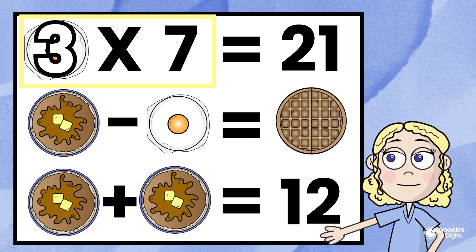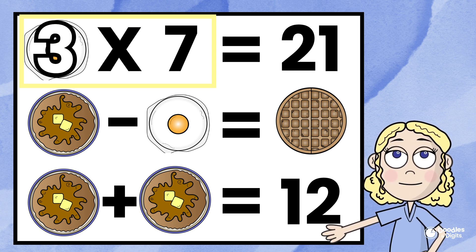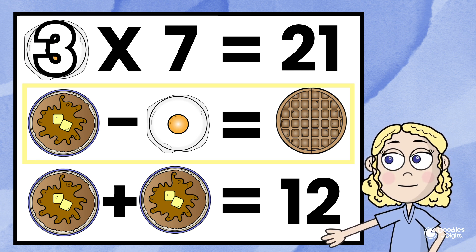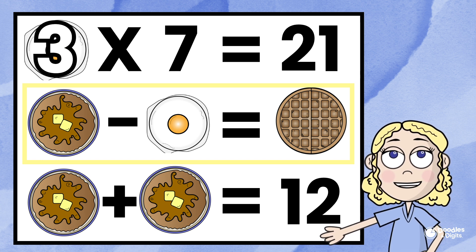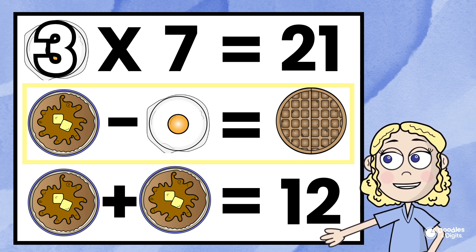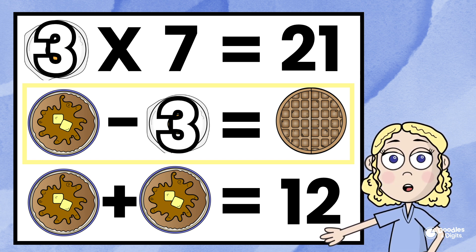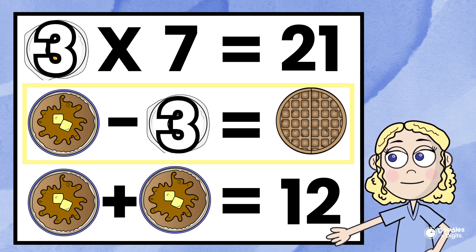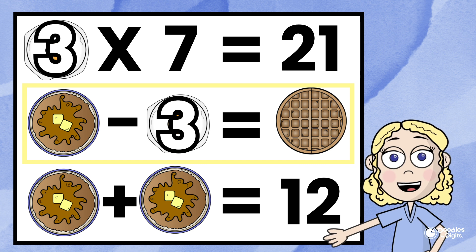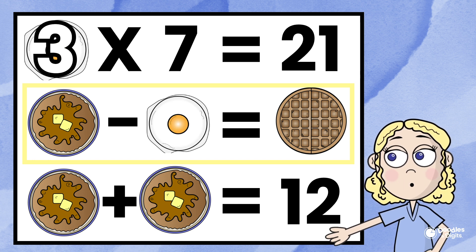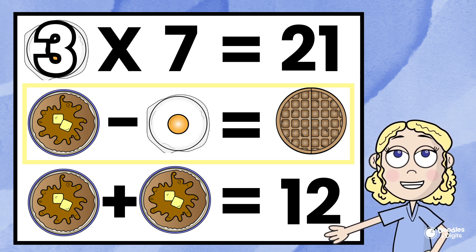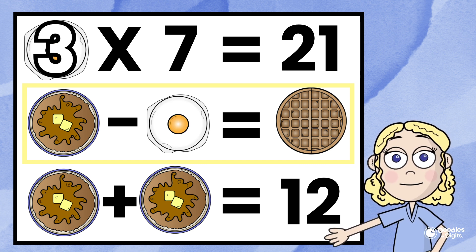Now I'll go on to the next one. Pancake minus egg equals waffle. We know the egg equals three, but I don't know what the pancake or the waffle represent yet. So I'm actually going to go down to the third problem.